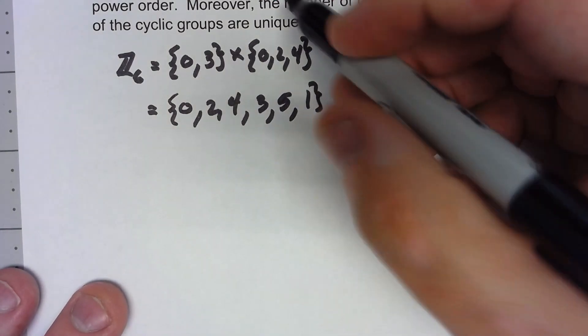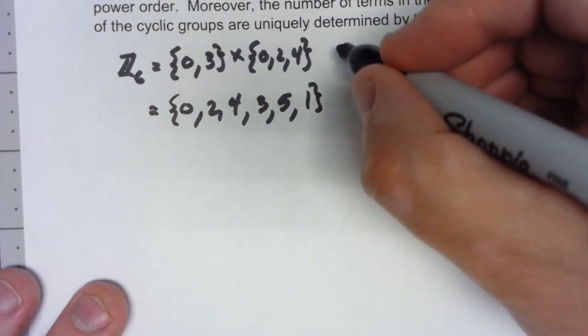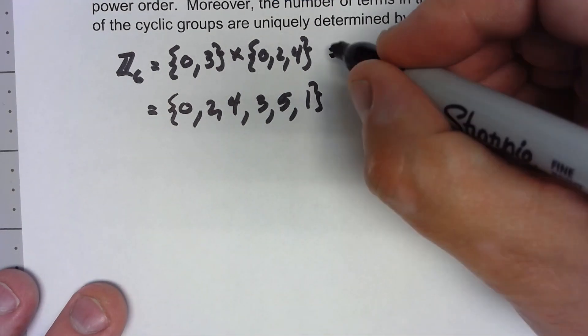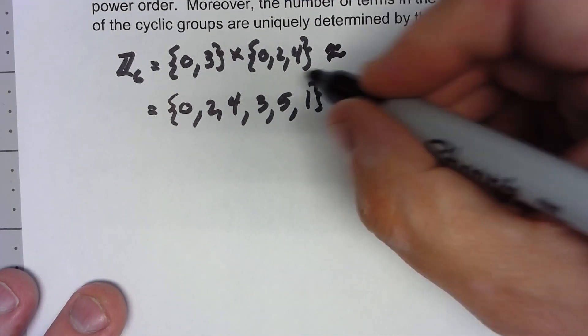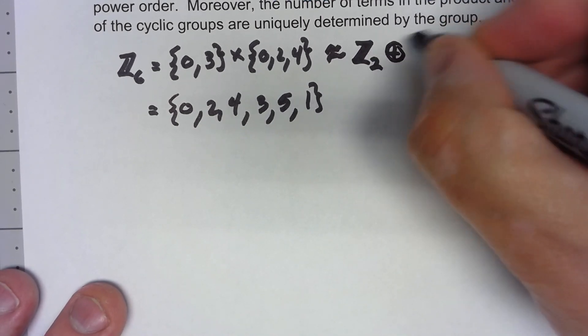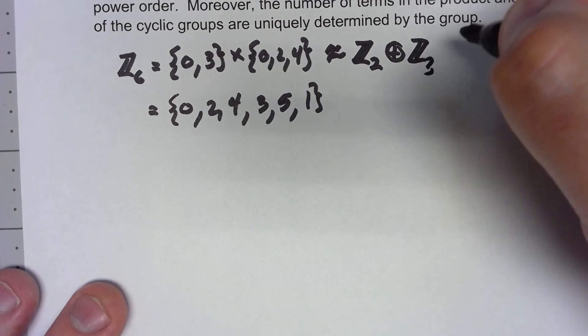And remember that any time we've got an inner direct product, it's the same thing as an external direct product, at least up to isomorphism. So this is saying this is isomorphic to Z2 external direct product Z3.